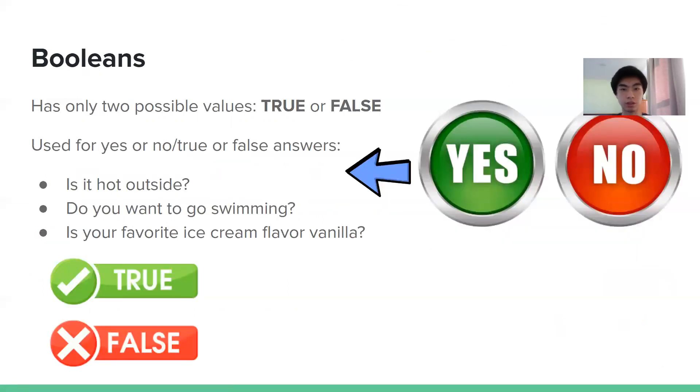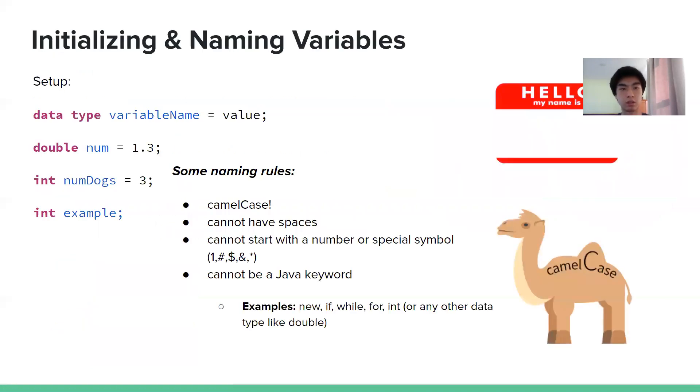And now Booleans. Booleans are simply just true or false. They can only be true or false. That's it. Okay, so to actually create variables, we're going to actually go into Eclipse here in just a sec. But the format is data type.